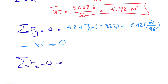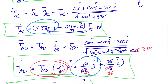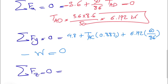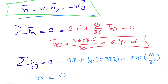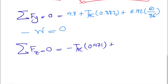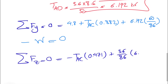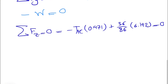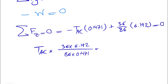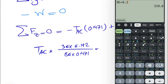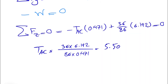For the sum of all forces in the Z direction equal to zero: TAB has no Z component. TAC contributes -TAC times 0.471. TAD contributes (36/86) times 6.192. Setting this equal to zero and solving: TAC equals 36 times 6.192, divided by 86, divided by 0.471, which gives TAC = 5.50 kilonewtons.